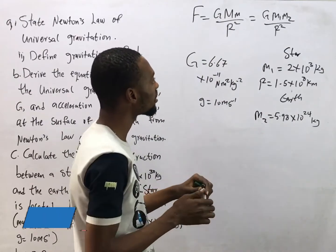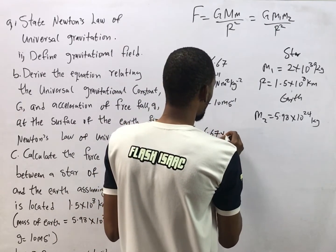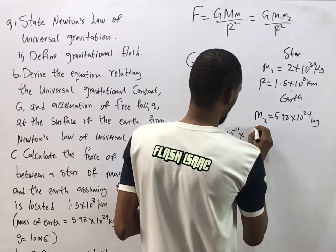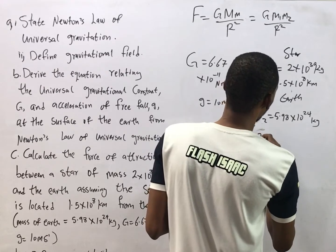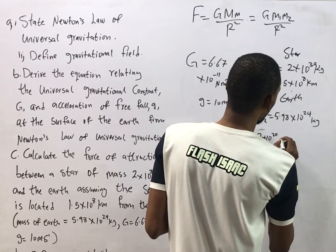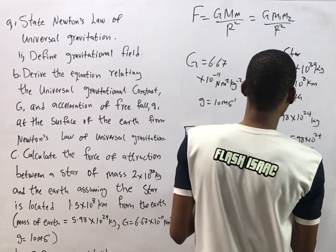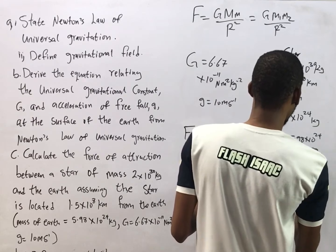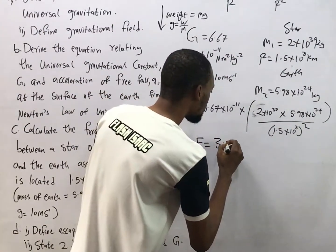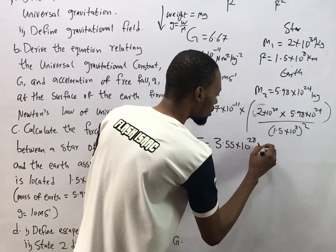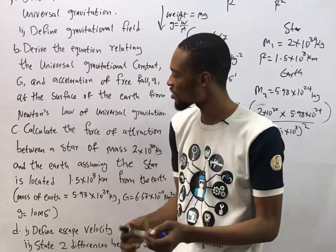Substituting: F = 6.67 × 10⁻¹¹ × (2 × 10³⁰) × (5.98 × 10²⁴) / (1.5 × 10⁸)². Solving this, F = 3.55 × 10²⁸ N. When punching this into your calculator, be very careful to avoid mistakes. That is the force of attraction between the star and the Earth.